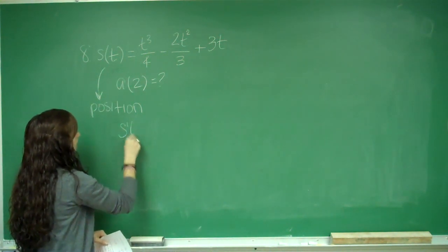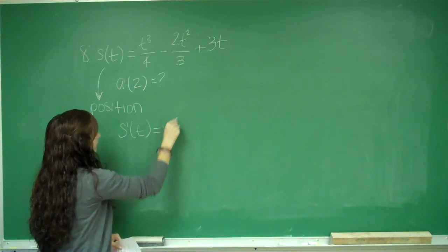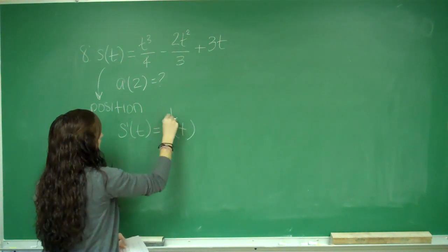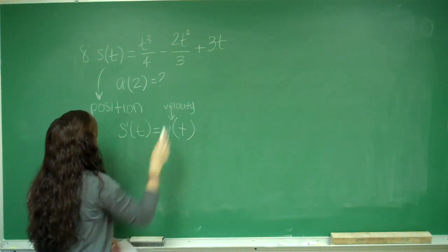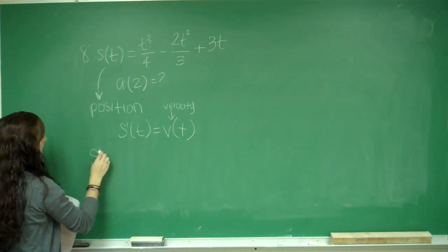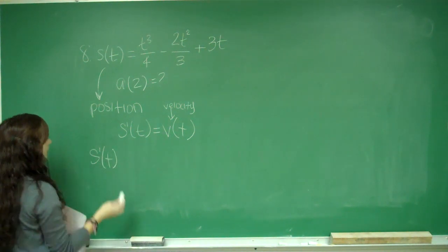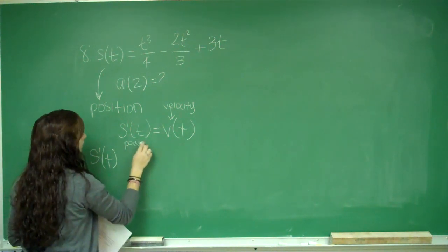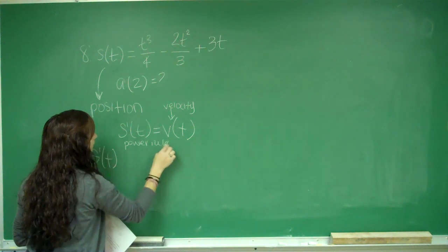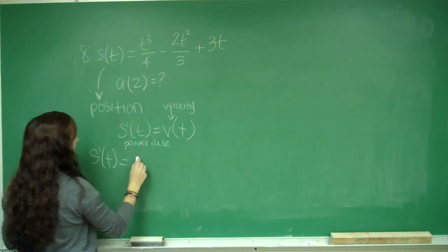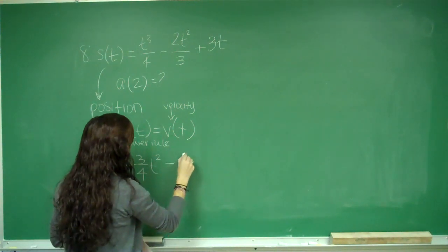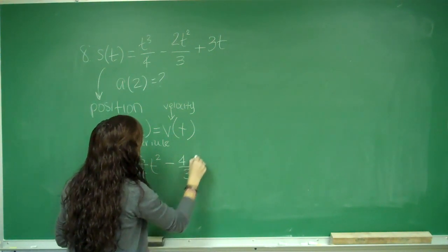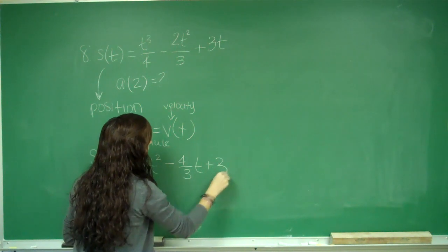S prime of t is equal to v of t, which is the velocity. So S prime of t, we're going to use power rule. I bring down my power. I have 3 fourths t squared minus 4 thirds t plus 3.